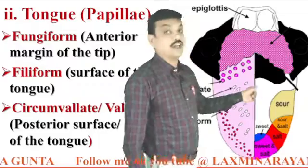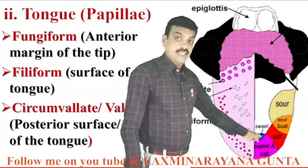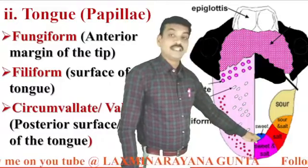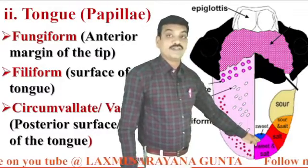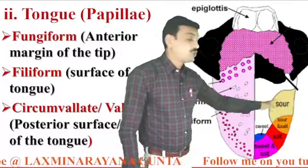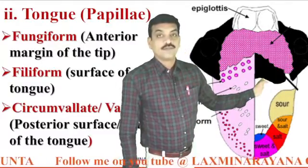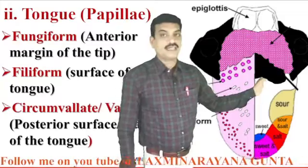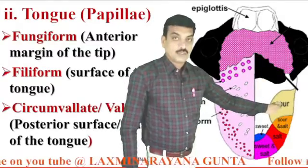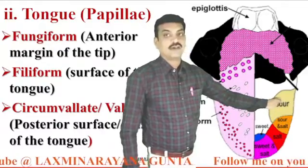In this picture you can observe different types of tastes. The anterior-most region of the tongue bears taste buds responsible for sweet and salt. The posterior region bears taste buds responsible for bitter taste. The sour taste is observed in the margins of the tongue.